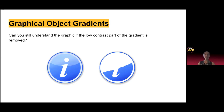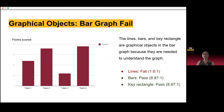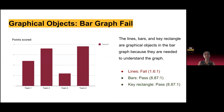Graphical object gradients — the rule here is: if you remove the lightest part of the gradient, can you still understand what is being communicated? In the case of an information icon, if you remove the light section, you can no longer see the 'i' and it doesn't make sense. So in this case, this one would not pass. For a bar graph example, this fails because the lines align with the numeric values. Without being able to perceive these lines because the contrast is too low, we can't really see what the different bars represent.